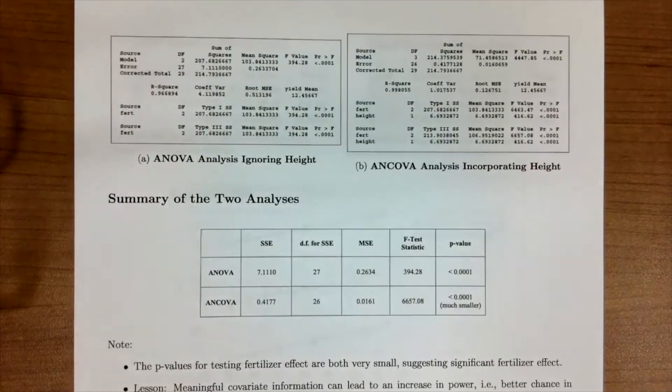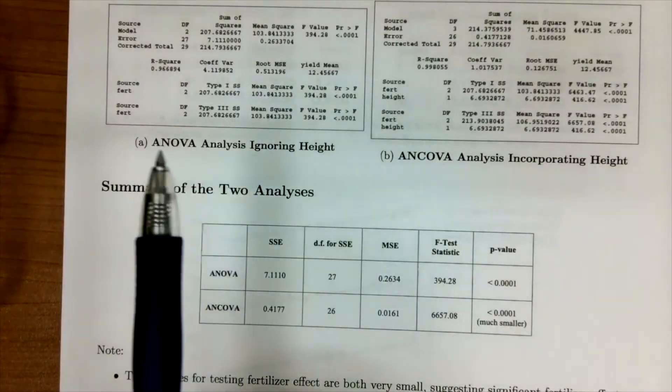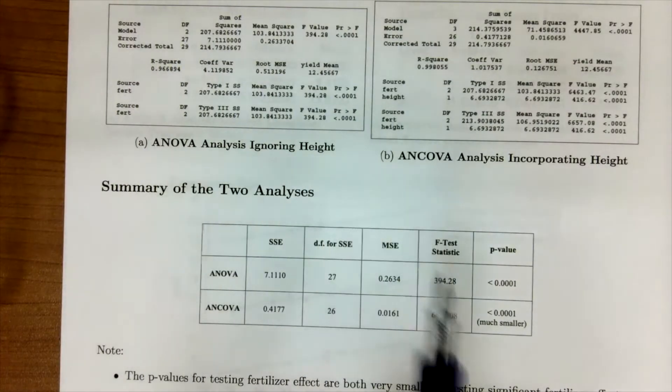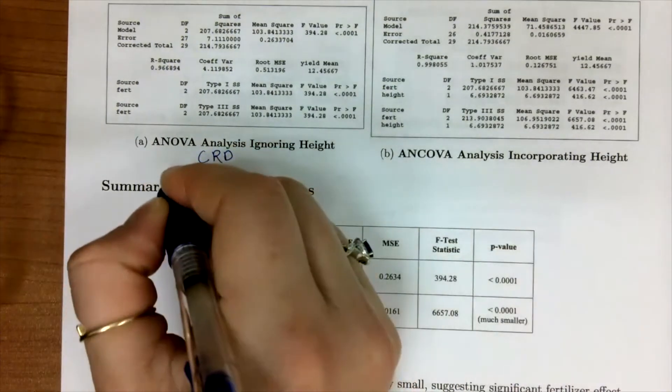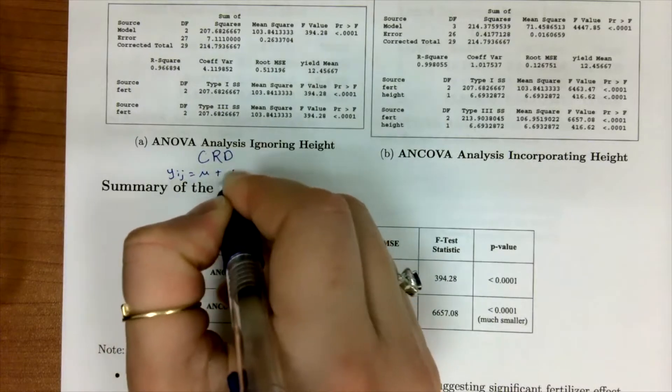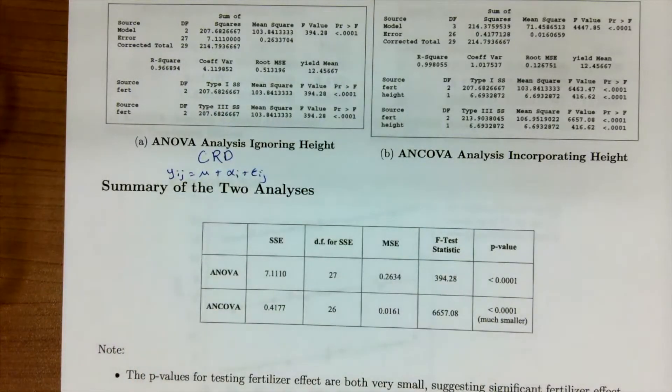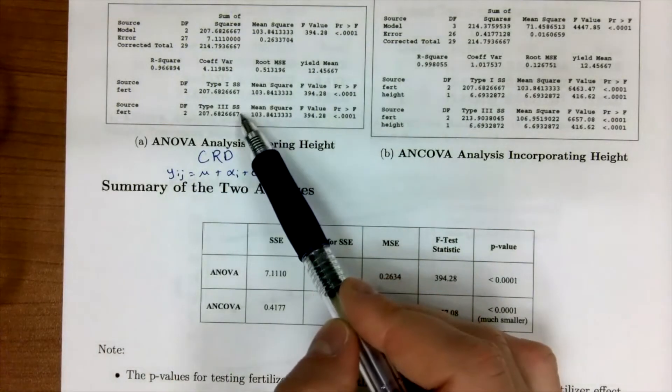Now I'm going to show you two analyses. In table A, this is the ANOVA when we ignore height. This is just a CRD. This would be our yij equals mu plus alpha i plus some error. In this design, we can see we only have our fertilizer and our type 1 and type 3 sums of squares are the same because we are in a balanced design.